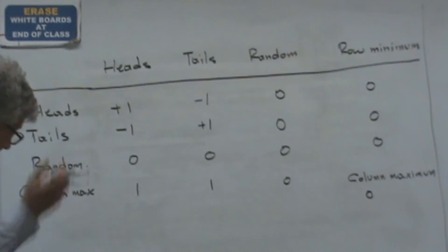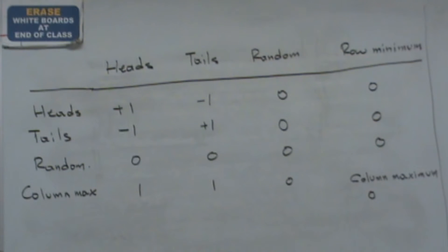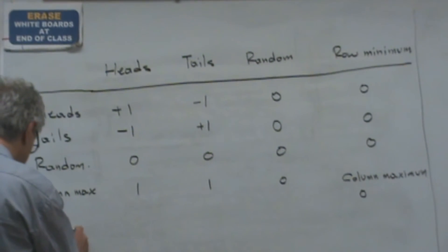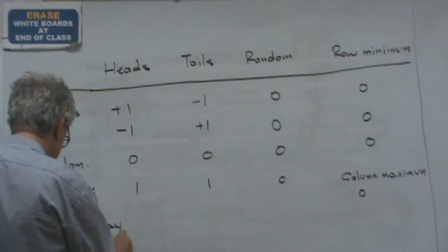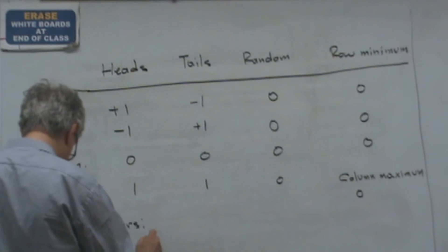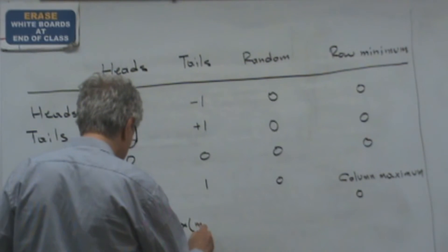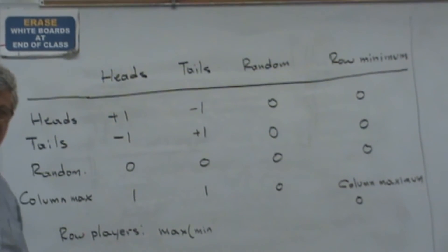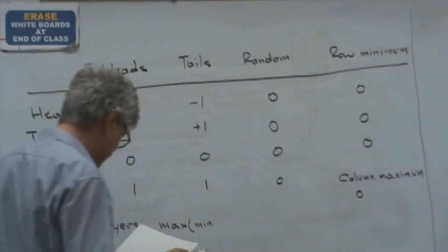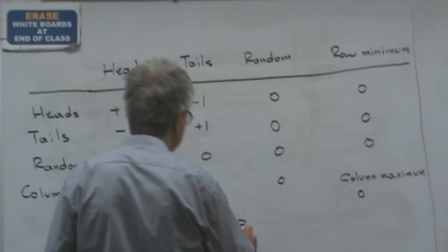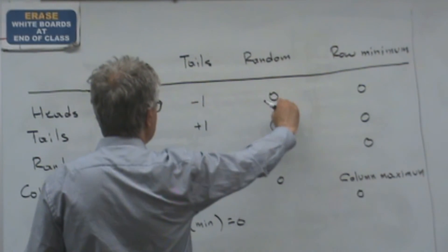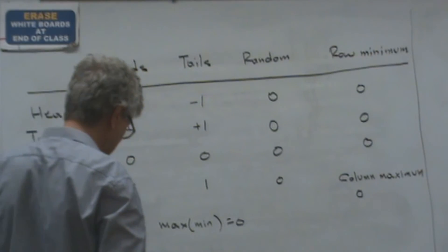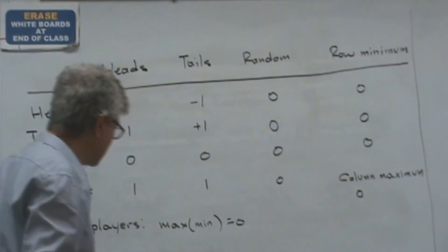So let's see now if there is an equilibrium point. One way to check that is to determine the row player's max min. So we take the minimum of every row and then we find the maximum of the minimum. Well, that is obviously zero. For every row we have zero. So the max min, all the minima are zero. So the maximum of the minimum is zero.